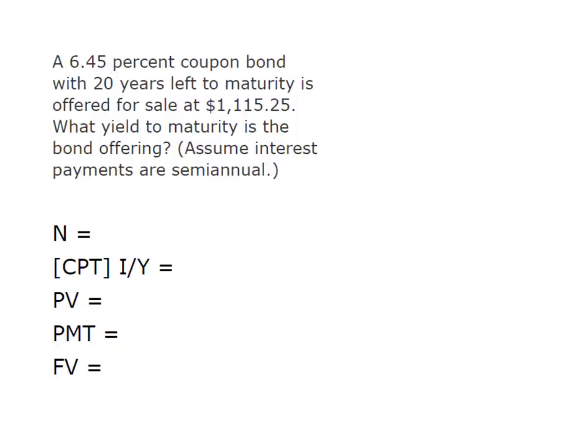So we have a 6.45% coupon bond with 20 years left to maturity, currently offered for sale at $1,115.25, so selling at a premium. We want to know what is the yield to maturity.